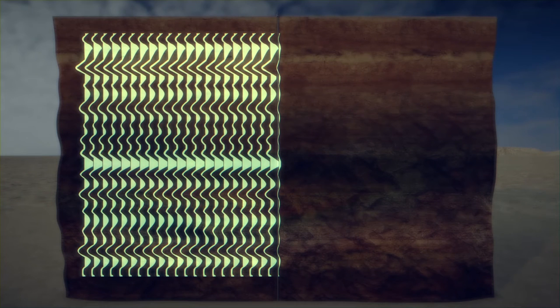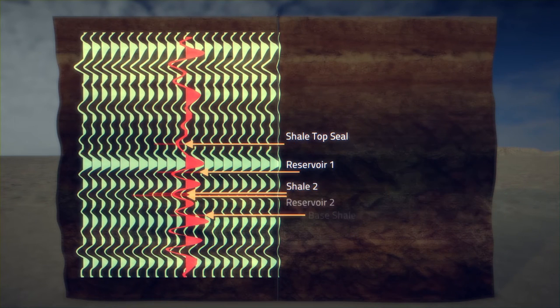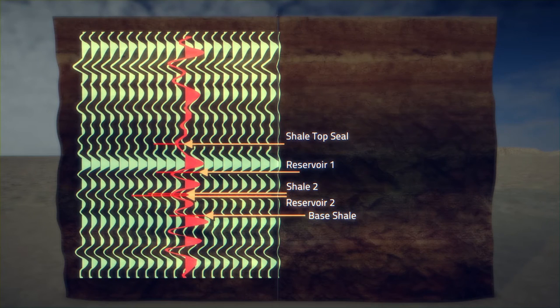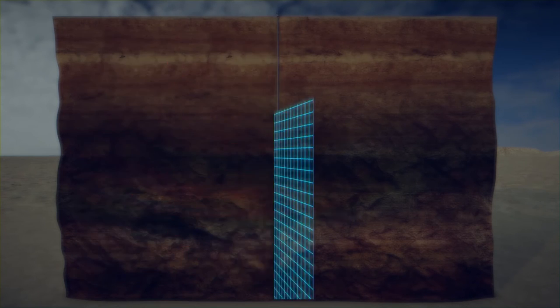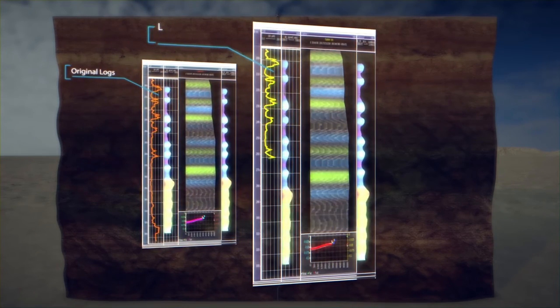This data is then interpreted on seismic workstations. Log data from these wells and velocities from the new VSP allow for pinpoint accuracy for the shale top seal and the two reservoirs are located on the seismic.